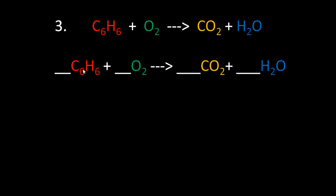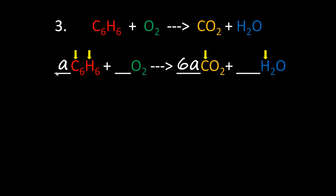In step one, we can select carbon because it appears once on the left and right side of the equation. Since there are more carbon atoms on the left, we put letter 'a' there. We have 6a carbon atoms; to balance that we put 6a on the right and carbon is balanced. Next, hydrogen also appears once on each side. We have 6a hydrogen atoms on the left, so we must put 3a on the right so that two times 3a equals 6a.